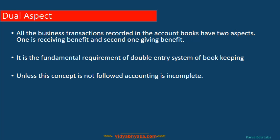The next concept is the Dual Aspect Concept. According to this concept, all business transactions recorded in the accounting books have two aspects: one is receiving a benefit and the second is giving a benefit. The first book on accounting was written by Luca Pacioli, and the chapter was titled Double Entry Bookkeeping — the title itself says that for any single business transaction we record a double entry in the books of account, meaning for any one transaction we record two lines.